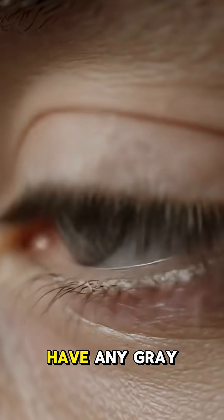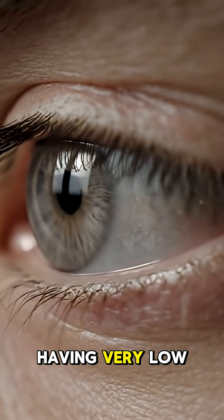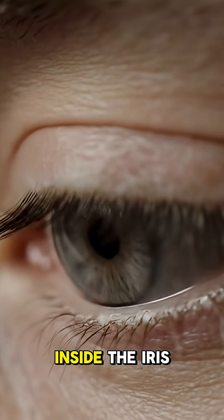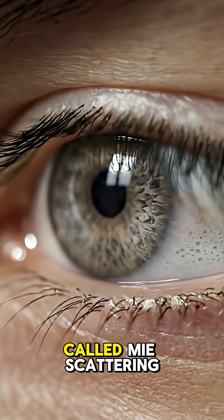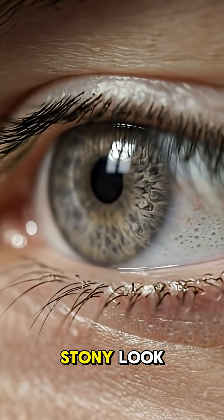Gray eyes don't actually have any gray pigment. Their unique appearance comes from having very low levels of melanin, combined with a special way light scatters inside the iris. This scattering effect, called Mie scattering, is what creates that striking silver or stony look.